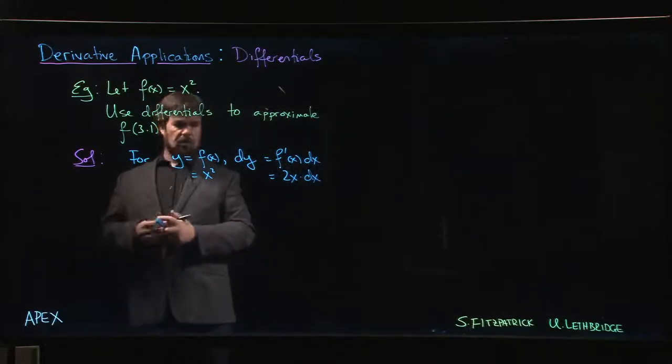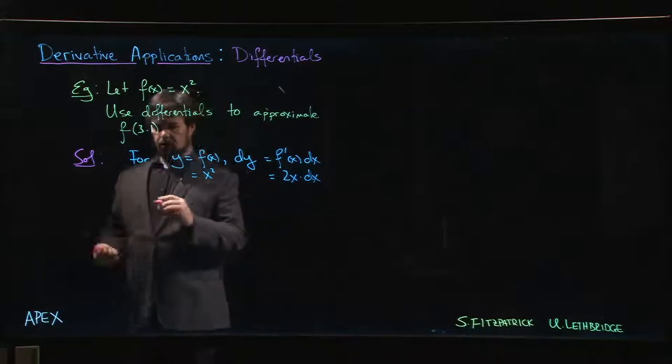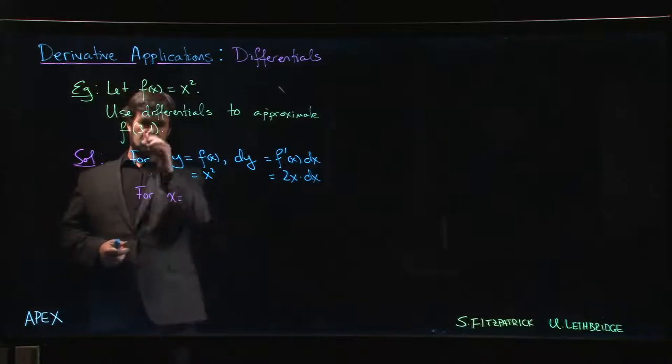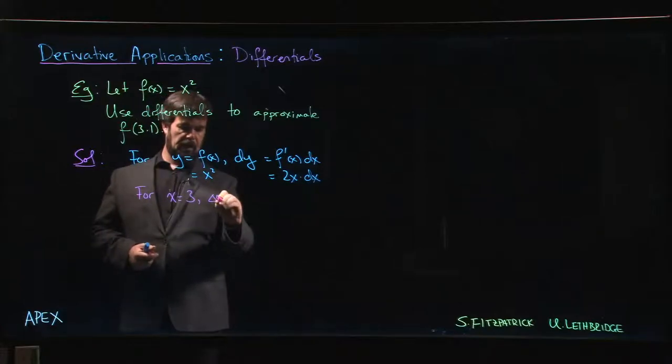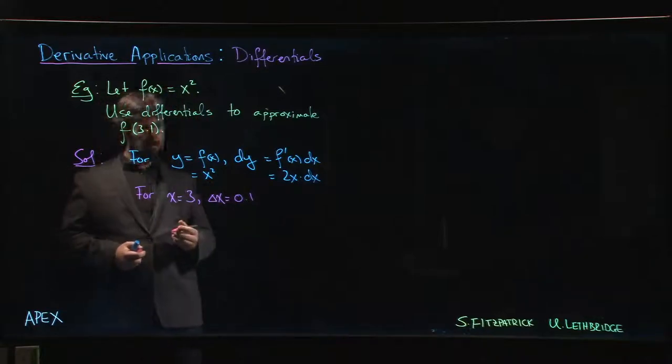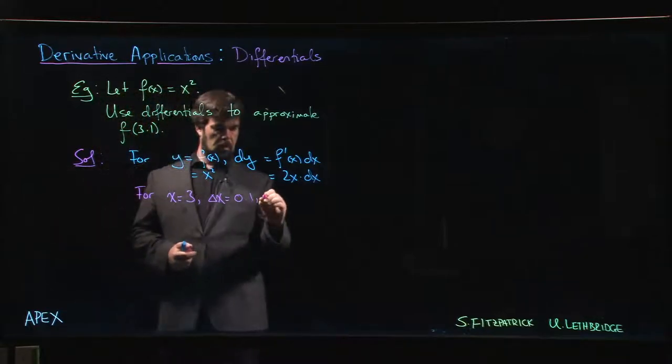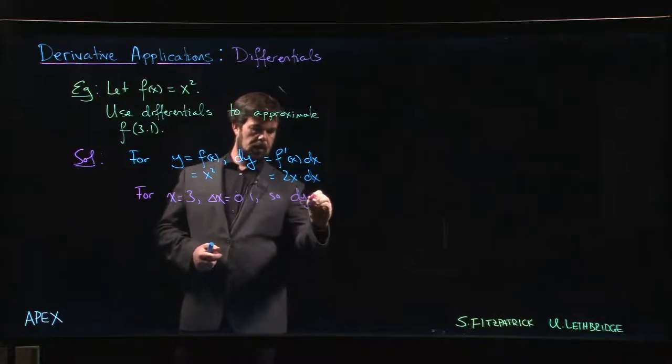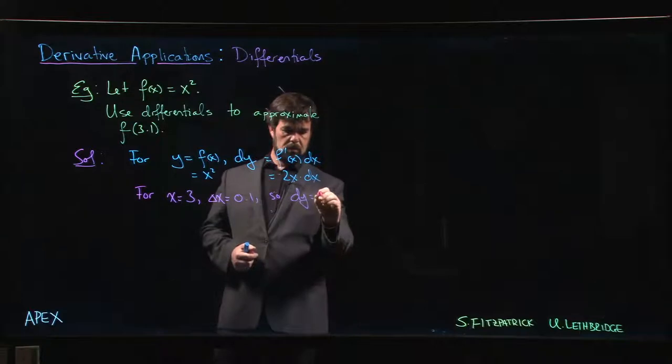So we're going to take x to be 3, then delta x is going to be 0.1. That means dy is going to be equal to 2 times 3 times 0.1.